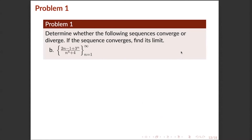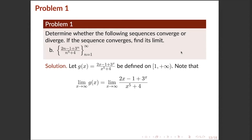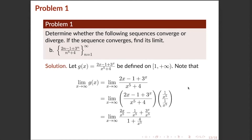For problem 1b, we will determine whether the sequence converges or diverges, and find its limit if it converges. Solution: let g(x) = (2x − 1 + 3^x) / (x^5 + 4) defined on [1, +∞). We compute lim(x→+∞) g(x) by multiplying numerator and denominator by 1/x^5. We can cancel out terms whose limits go to 0 as x → +∞, and since lim 1 as x → +∞ is 1, we are left with lim(x→+∞) 3^x / x^5.